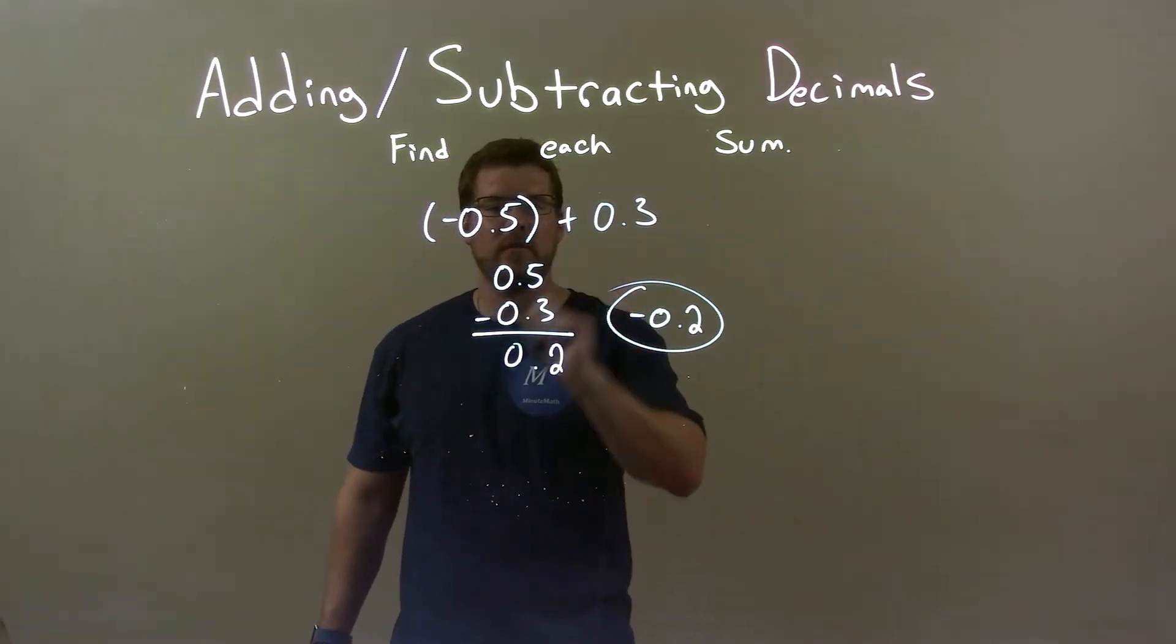So we put 0.5 first, then subtract 0.3, find the difference between the two, and that difference is 0.2.